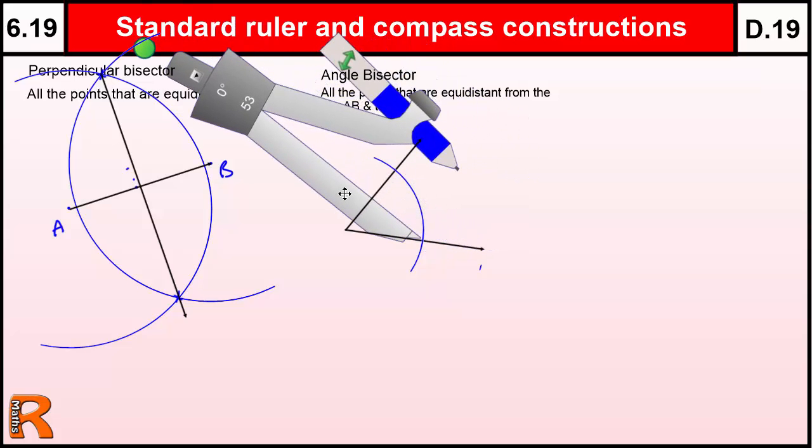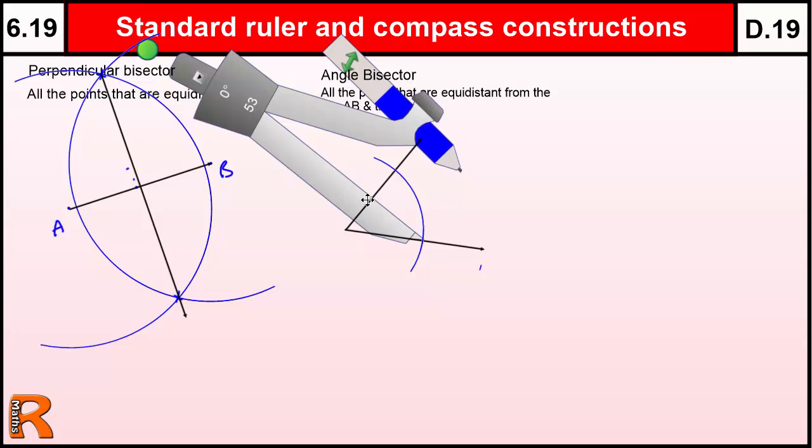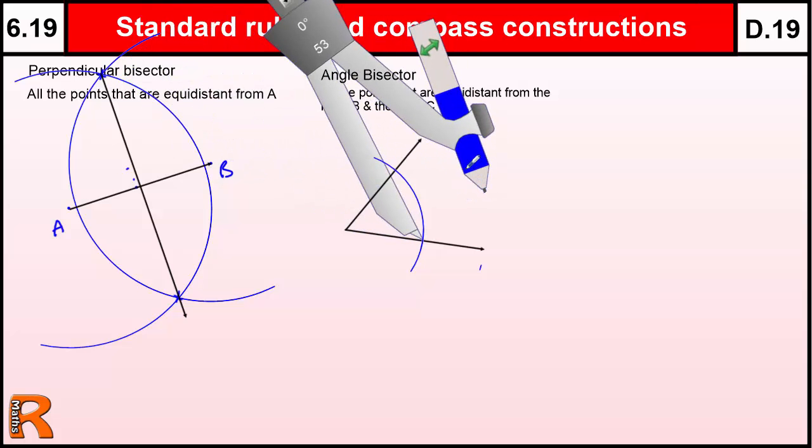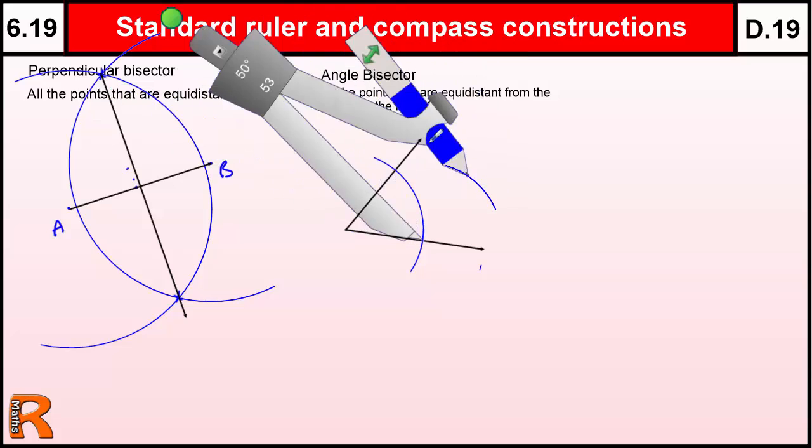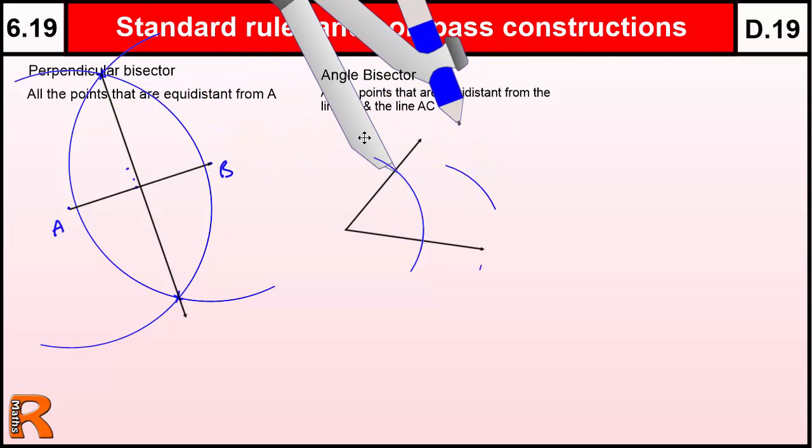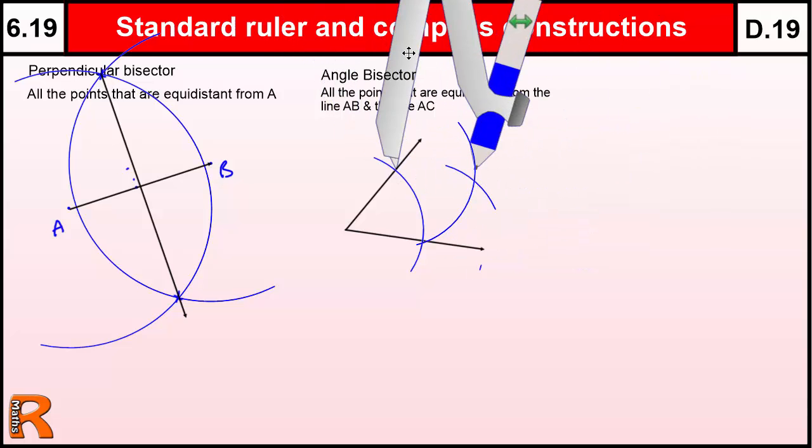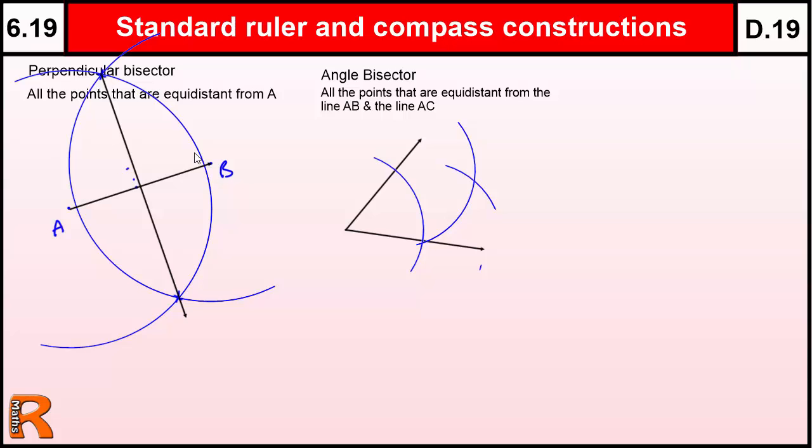So now I'm going to move it so my point is on the point where the arc cuts the line, and I'm going to draw another arc somewhere in the middle. And I'm going to do the same thing over here. And here I've now constructed a point that is the same distance away from both lines. And I then can draw my line going through that point, through the center. That is the angle bisector. That cuts the angle in half exactly.